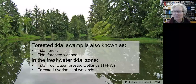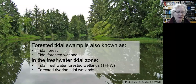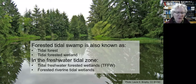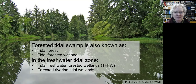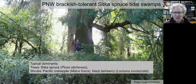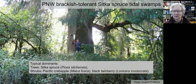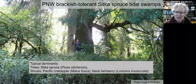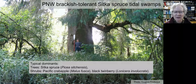Our terminology for tidal swamps isn't yet systematized. For example, forested tidal swamp is also known as tidal forest and tidal forested wetland. In the freshwater tidal zone, you may have heard of TFFW, or tidal freshwater forested wetlands, also known as forested riverine tidal wetlands. But the most prevalent and characteristic tidal swamps of the Pacific Northwest are dominated by brackish-tolerant Sitka spruce, with an understory of brackish-tolerant shrubs like Pacific crabapple and black twinberry.